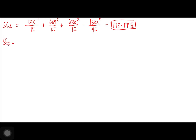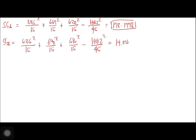For SSB, the sum of squares for method of teaching, we use the row totals: (636² / 15) + (630² / 15) + (616² / 15) − (1882² / 45). This gives SSB = 14.04.